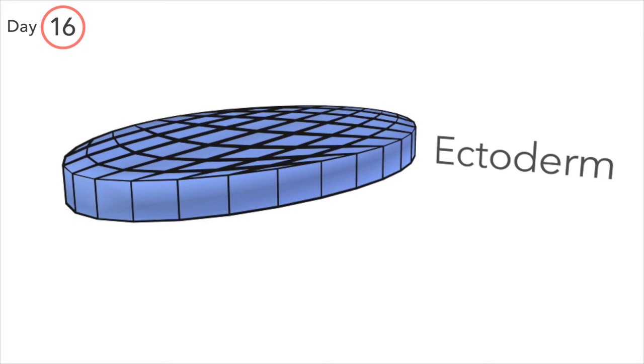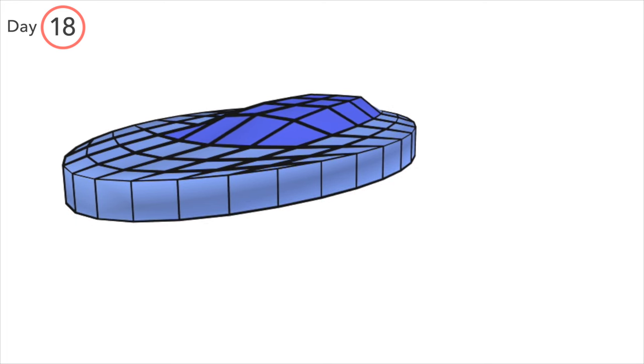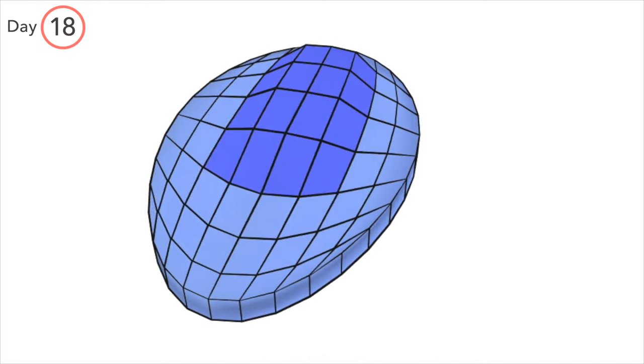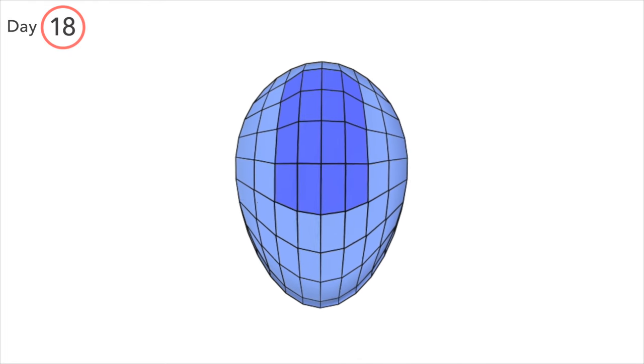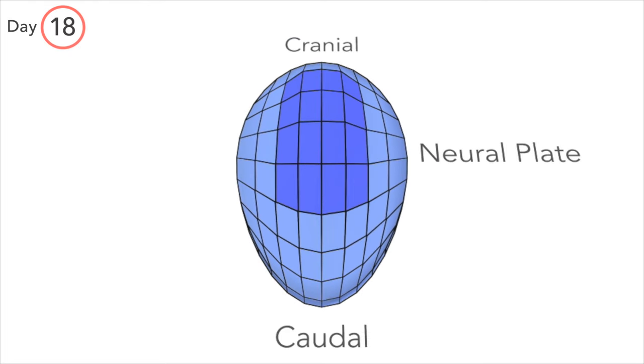Around day 18, part of the ectoderm begins to thicken. This portion is known as the neural plate, in dark blue, between the cranial end of the embryo and the primitive node.